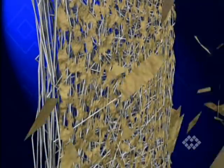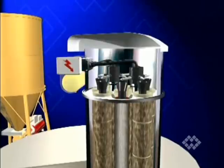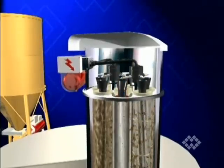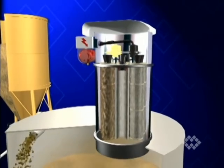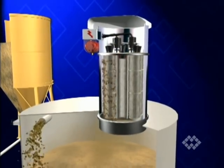This so-called reverse air jet passes from inside the cartridges through the media, removing the layer of dust deposit on the outside of the cartridge elements. The dust particles fall back down into the hopper.